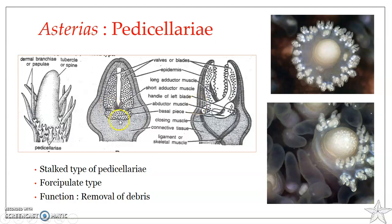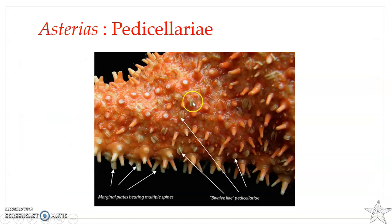The straight type of pedicillariae occur largely among the dermal branchia — they are usually found among the dermal branchia. The crossed type of pedicillariae are found at the base of the spine. So those found among the dermal branchia are the straight type, as you can see here — it is a straight type.